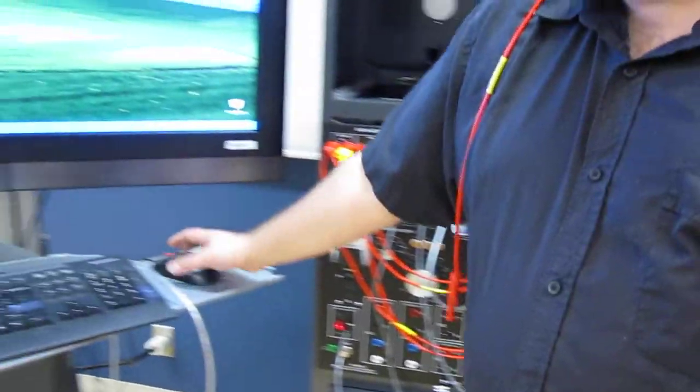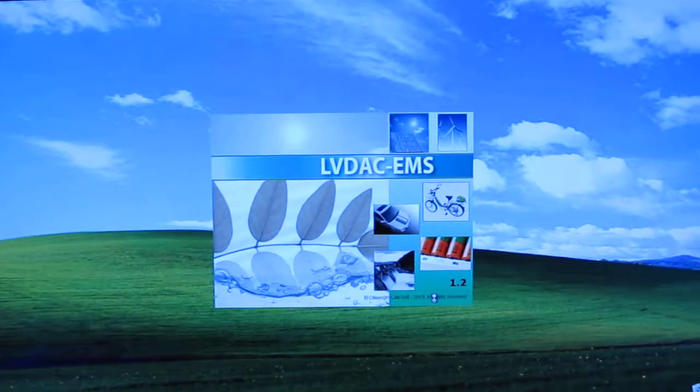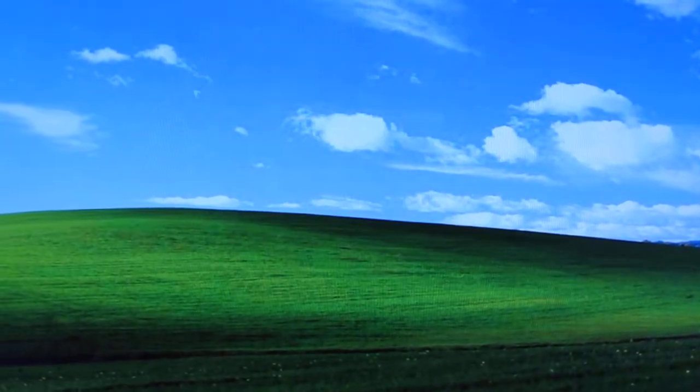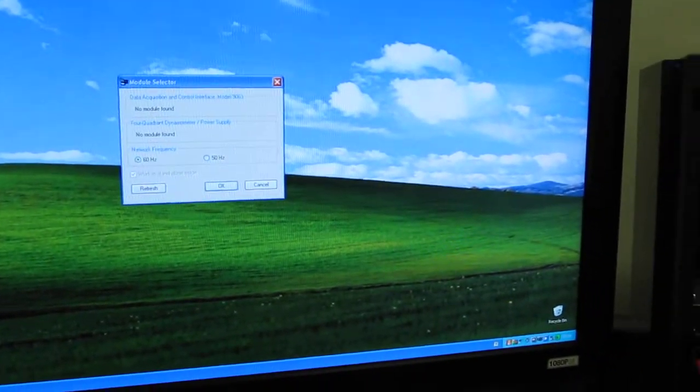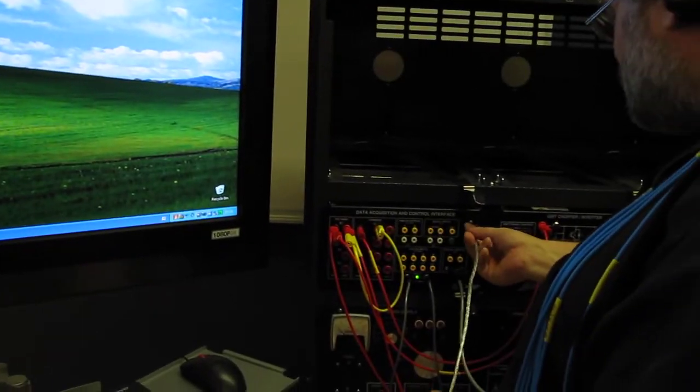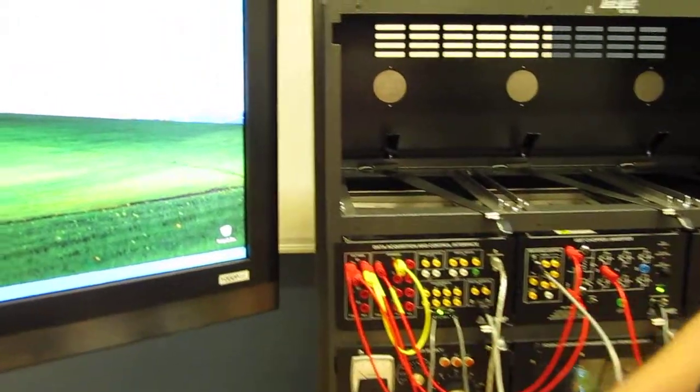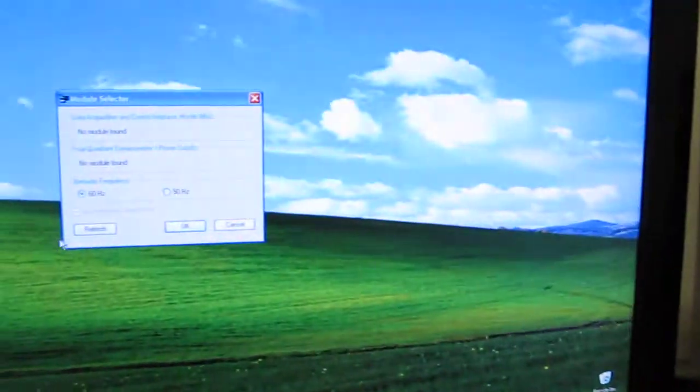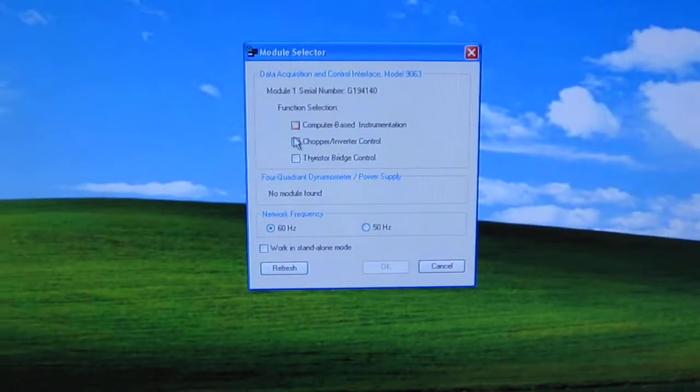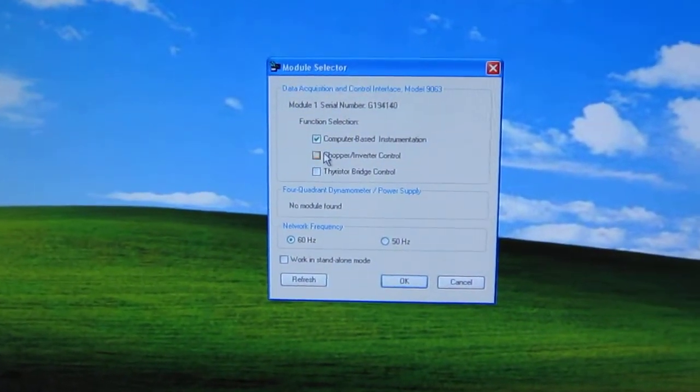To do the control here, I will launch the LV DAC software. If I was connected it would tell me that it detected the module. Since I wasn't connected in the USB port, I click refresh here. Now it found it. I want the chopper functions, that's for sure.